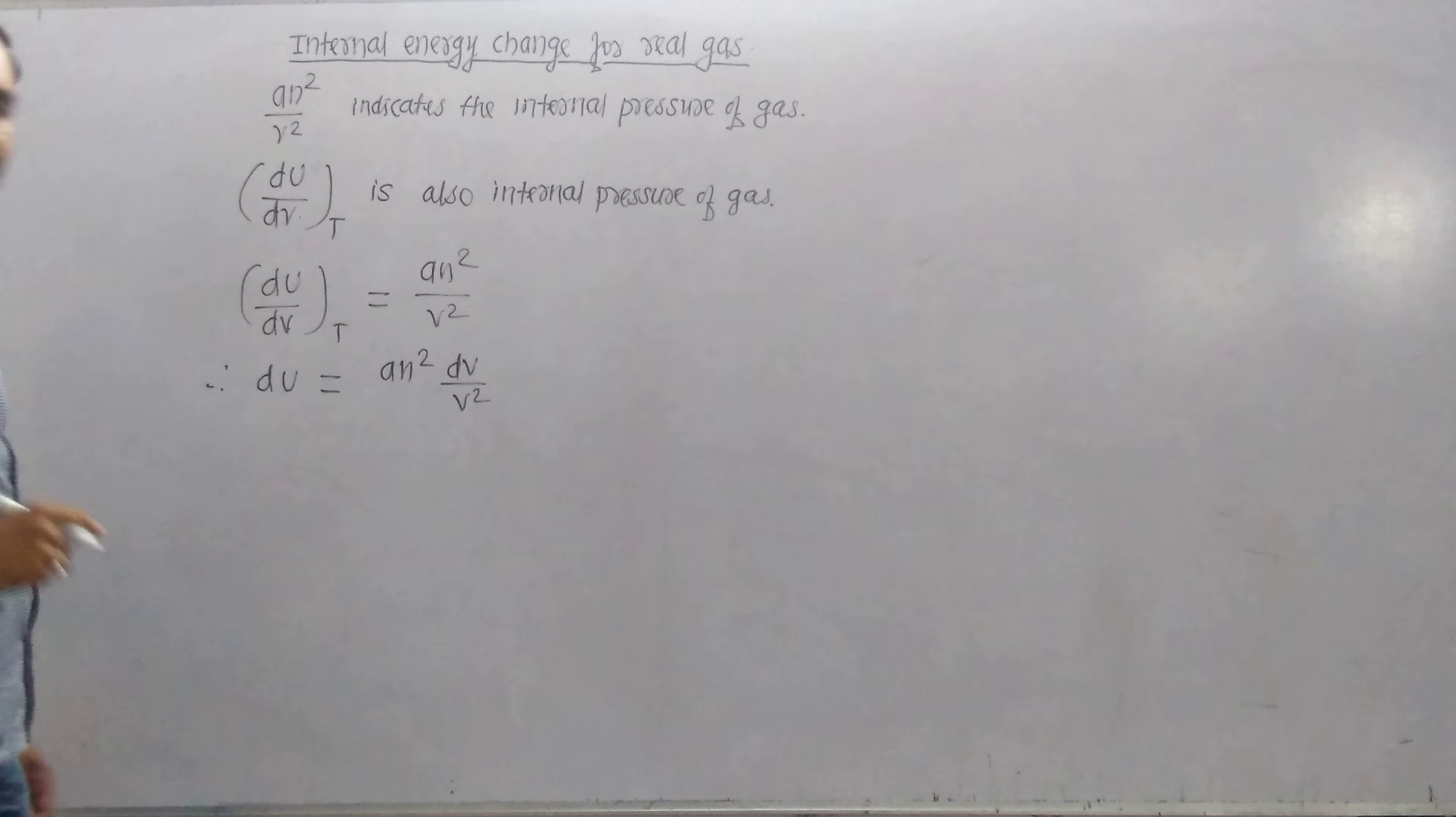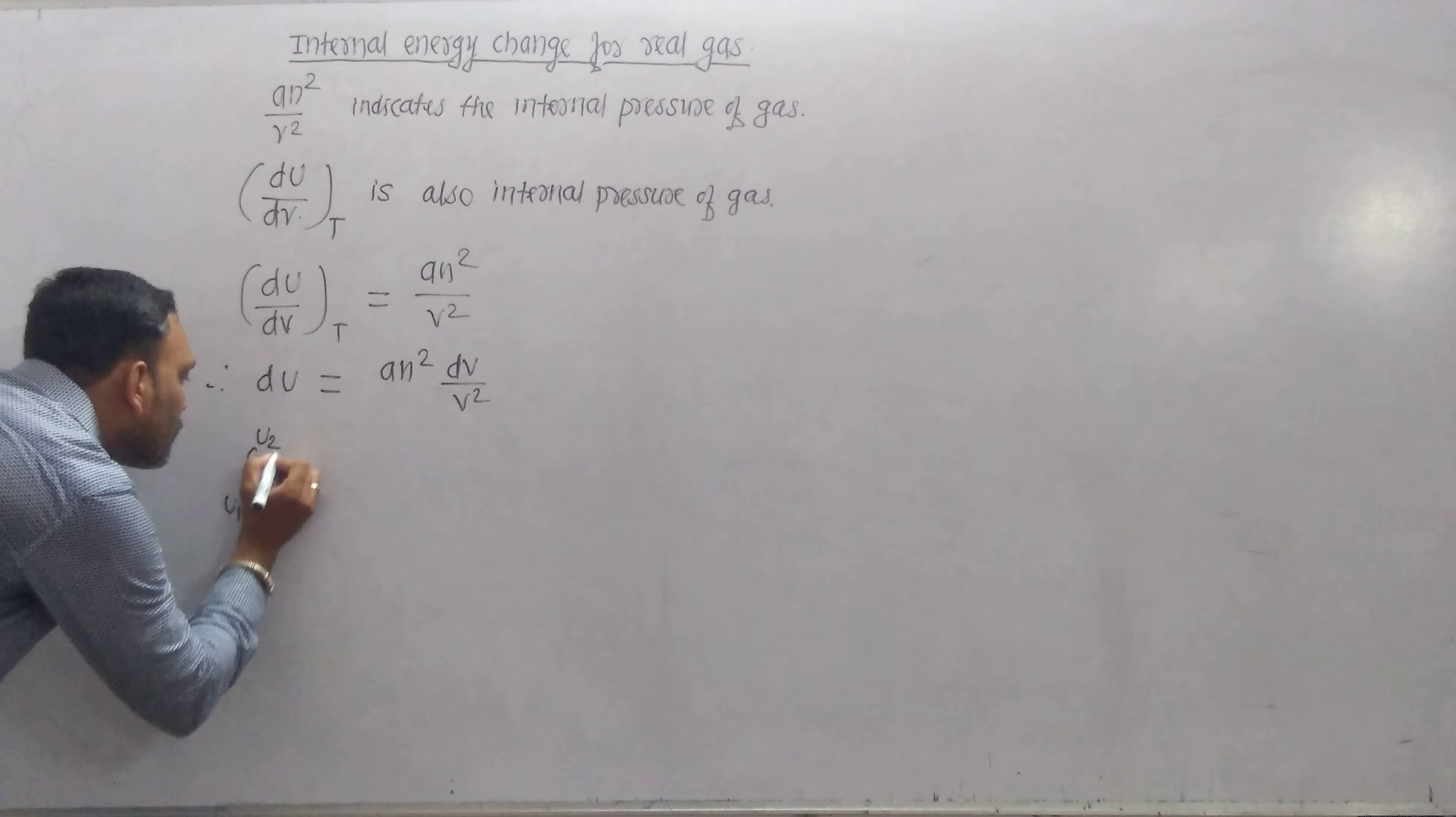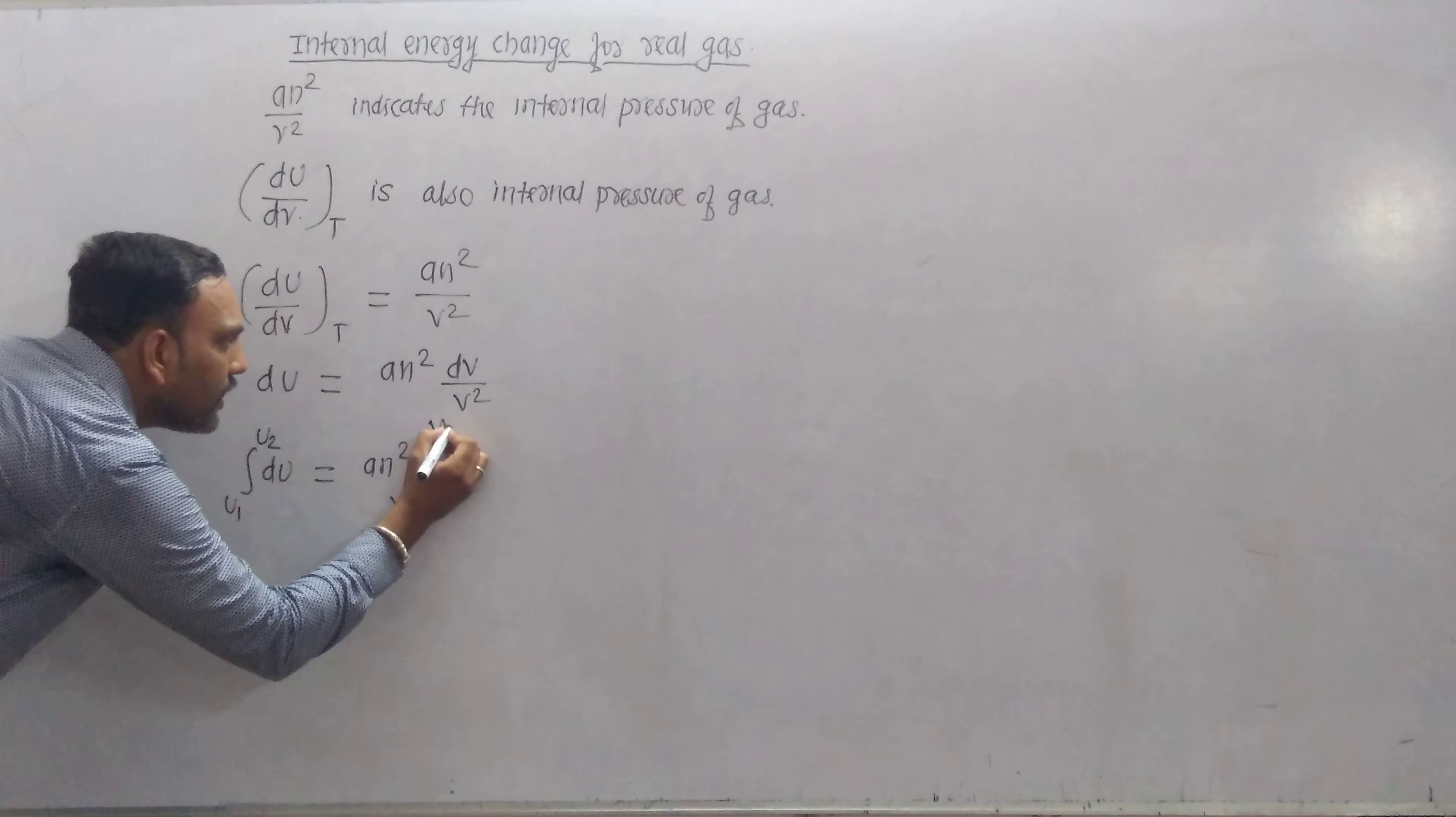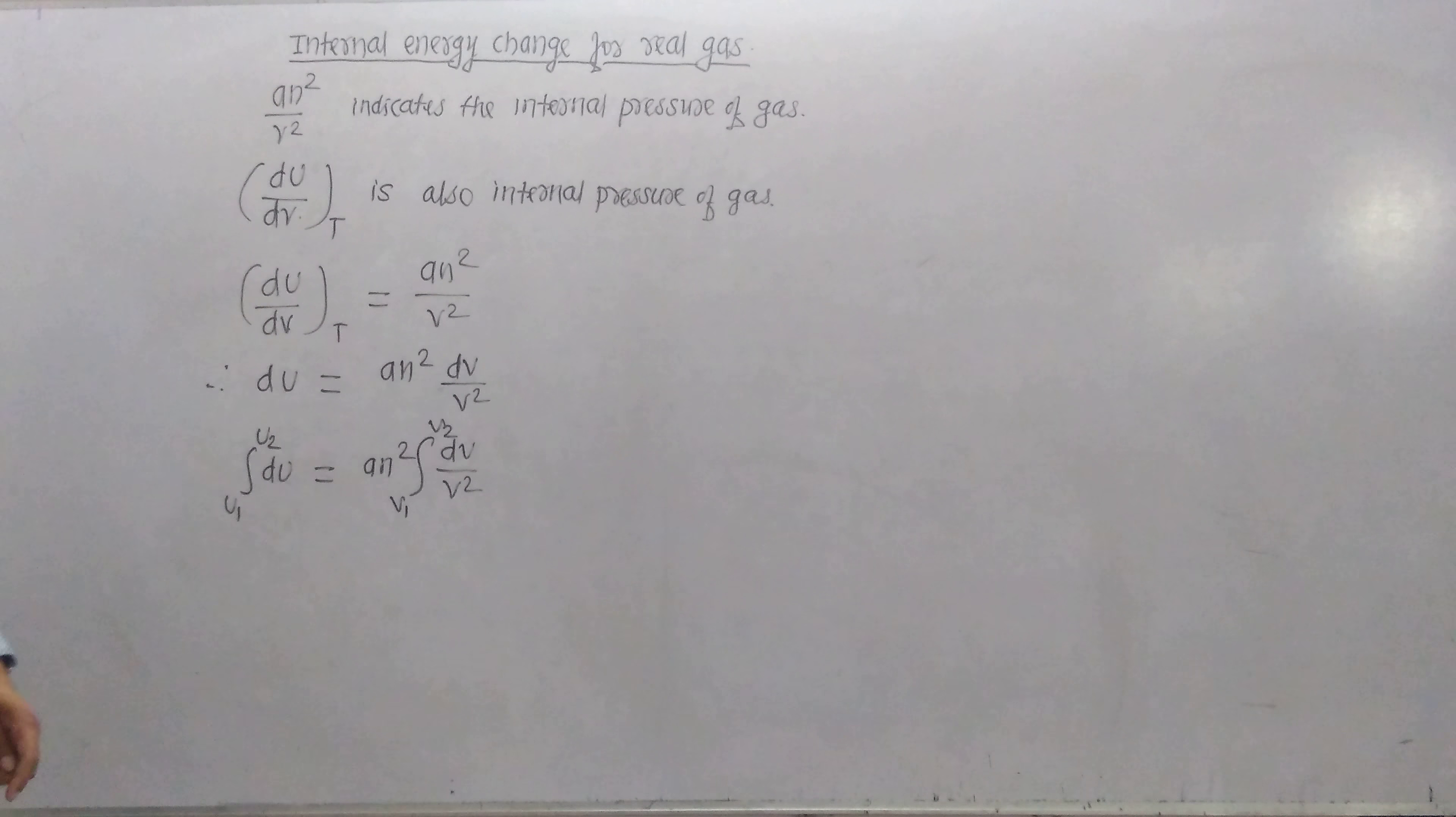Integrating this equation between suitable limits, one can write as integration from U₁ to U₂ of dU equals AN² times integration from V₁ to V₂ of dV/V².